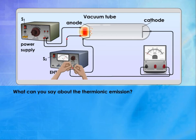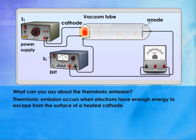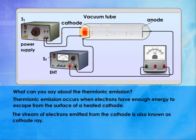What can you say about thermionic emission? Thermionic emission occurs when electrons have enough energy to escape from the surface of the heated cathode. The stream of electrons emitted from the cathode is also known as cathode ray.